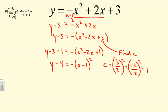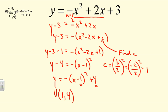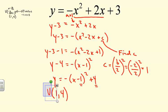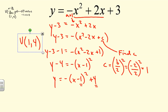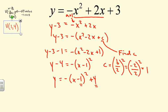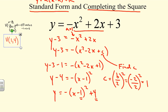We can now write y equals negative (x minus 1) squared plus 4. The square is completed, and from this standard form we can identify the vertex — h and k — which equals (1, 4), the same value we found earlier.